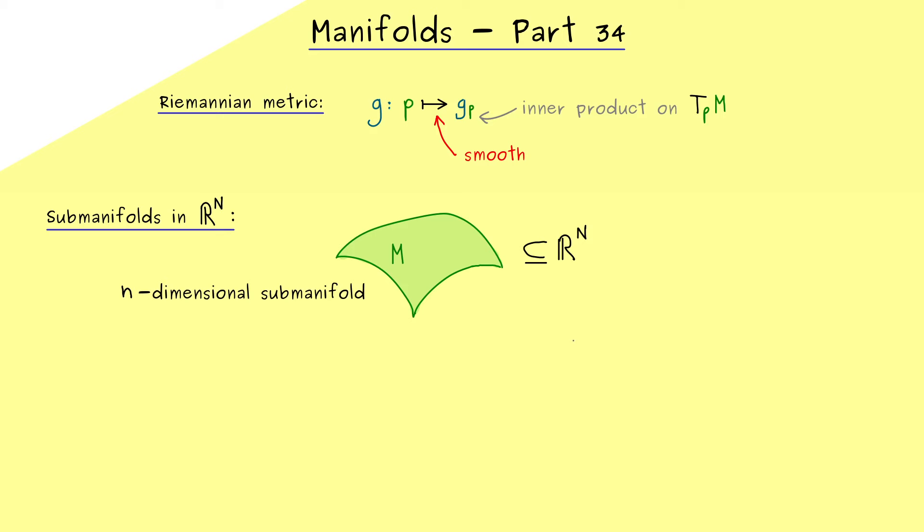Hence we can still say that we have a lower case n-dimensional submanifold M. And now we can use that the surrounding R^N here has a standard geometry already. In short, this is the Euclidean geometry given by the standard inner product. Therefore, if we translate that to the submanifold, we get a standard Riemannian metric on the manifold M.